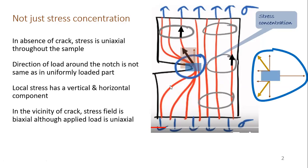Let's magnify this area. In the vicinity of the crack or notch, the stress state is biaxial now. Although the applied load was uniaxial, in the upper part of the notch we have stress with both a vertical component and a horizontal component. So the stress wheel near the crack is biaxial despite the applied load being uniaxial.